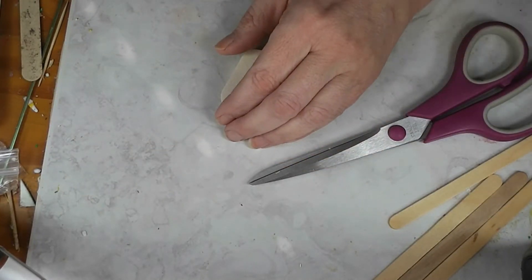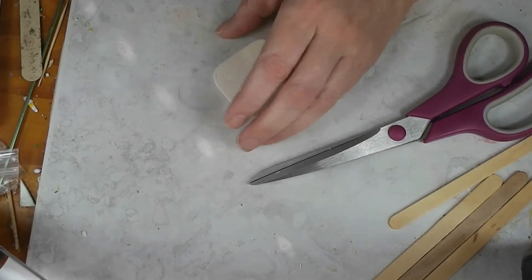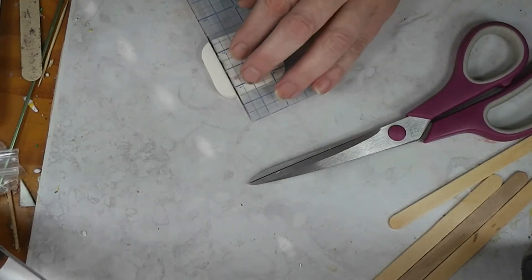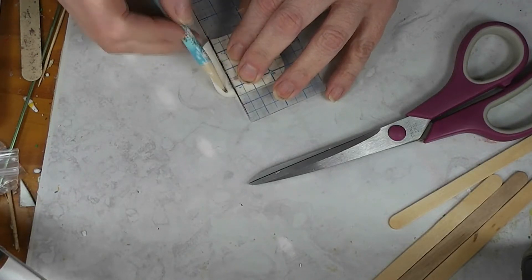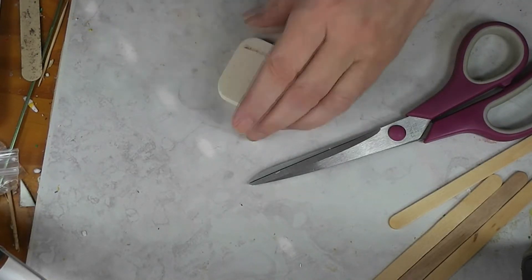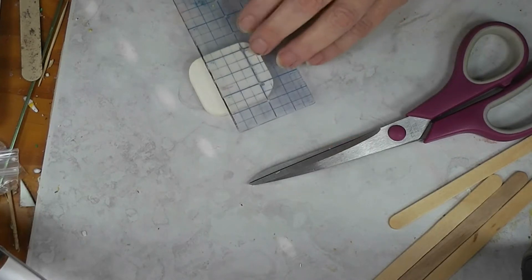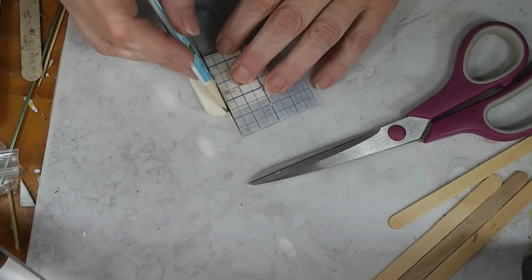So the first thing we need to do is see if I have something I can write on this with, because I need to draw a box. So I'm going to cut this. Yeah, pencil works. I wasn't sure if pencil worked, and I forgot to grab my pen.